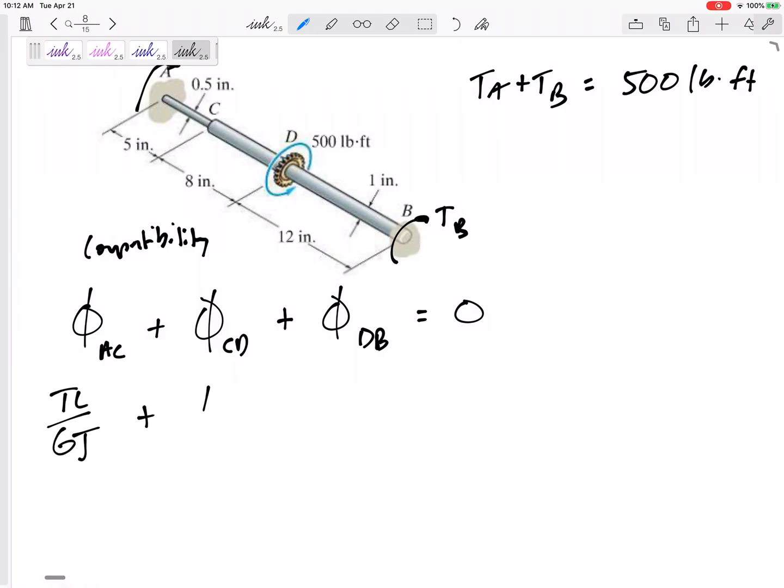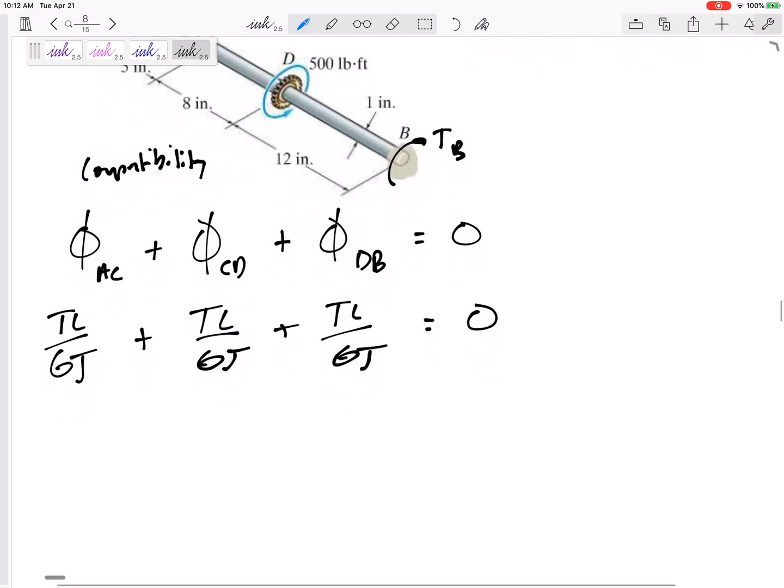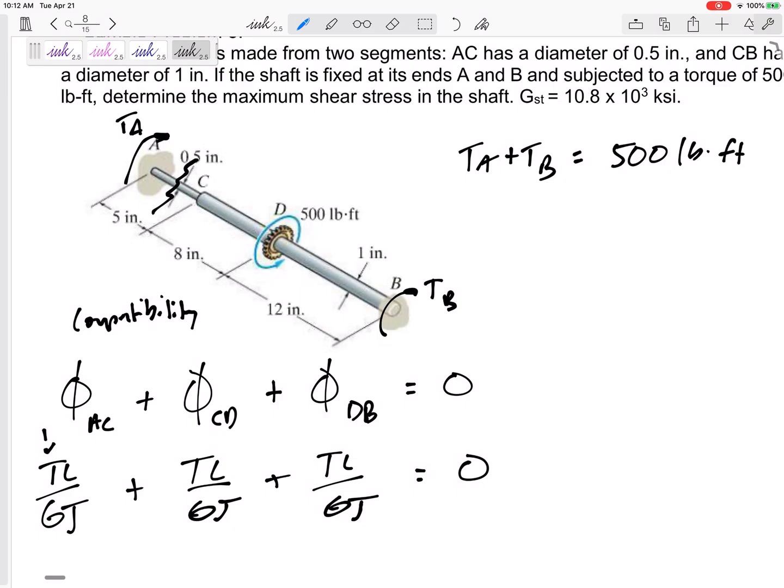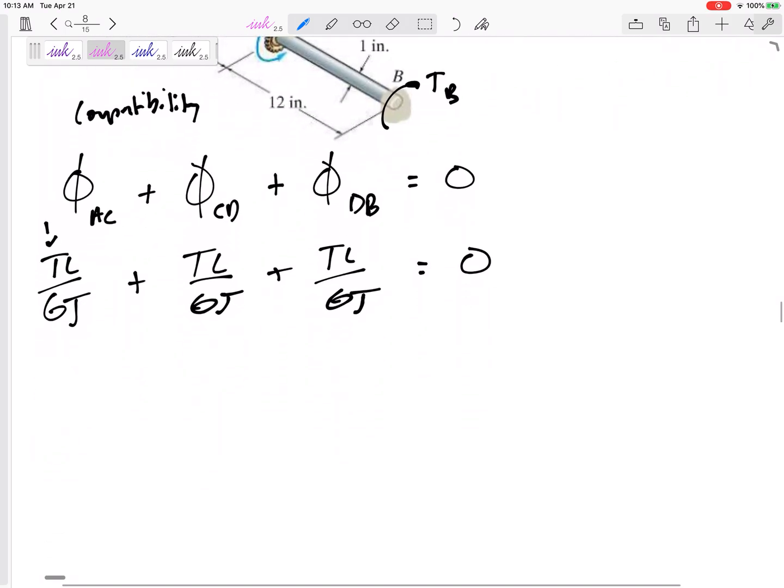What is angle of twist? Angle of twist is TL over GJ. But this T is the internal torque for each of those sections. So what is the internal torque inside section AC? Well, I would draw it like this. I've got TA and I cut it right here. So what do I need at this cut right here? I need a TA that way. Is that positive or negative? We're using my right hand, curling my fingers, my thumb is pointed out of the cut. So I need a positive TA right here.